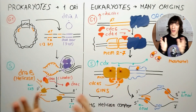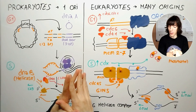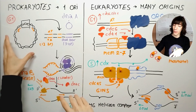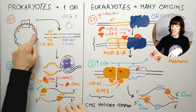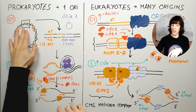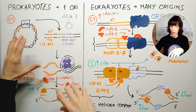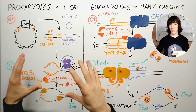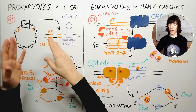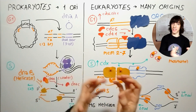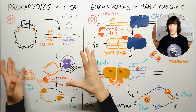Let's start with prokaryotes. Something that you have to be very clear about is that prokaryotes only have one chromosome. It is a circular chromosome, and it has only one origin of replication. The names we are going to use are specific for E. coli, which is the main model for prokaryotes. There might be some differences in other prokaryotes, but this is what everyone studies.